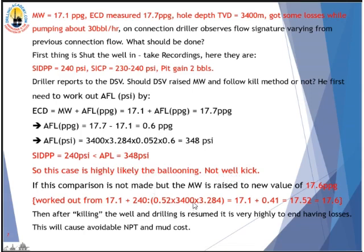If the DSV doesn't make this comparison and goes ahead to work out kill mud weight — say 17.6 PPG — and increases the mud weight to 17.6, I can guarantee you: if he's drilling an HPHT well where the PPFG window is very narrow, he will have losses when drilling with this mud weight. He will try to reduce losses and end up stuck between kick and loss. But this is not a kick — it is highly likely wellbore ballooning.